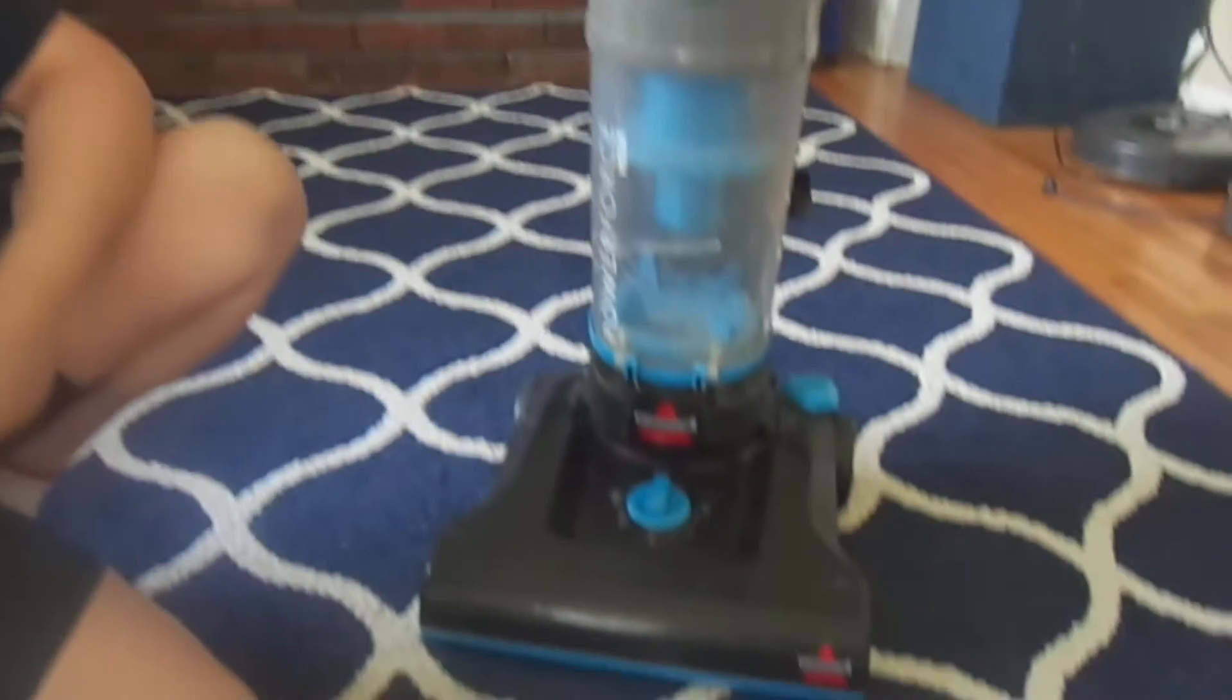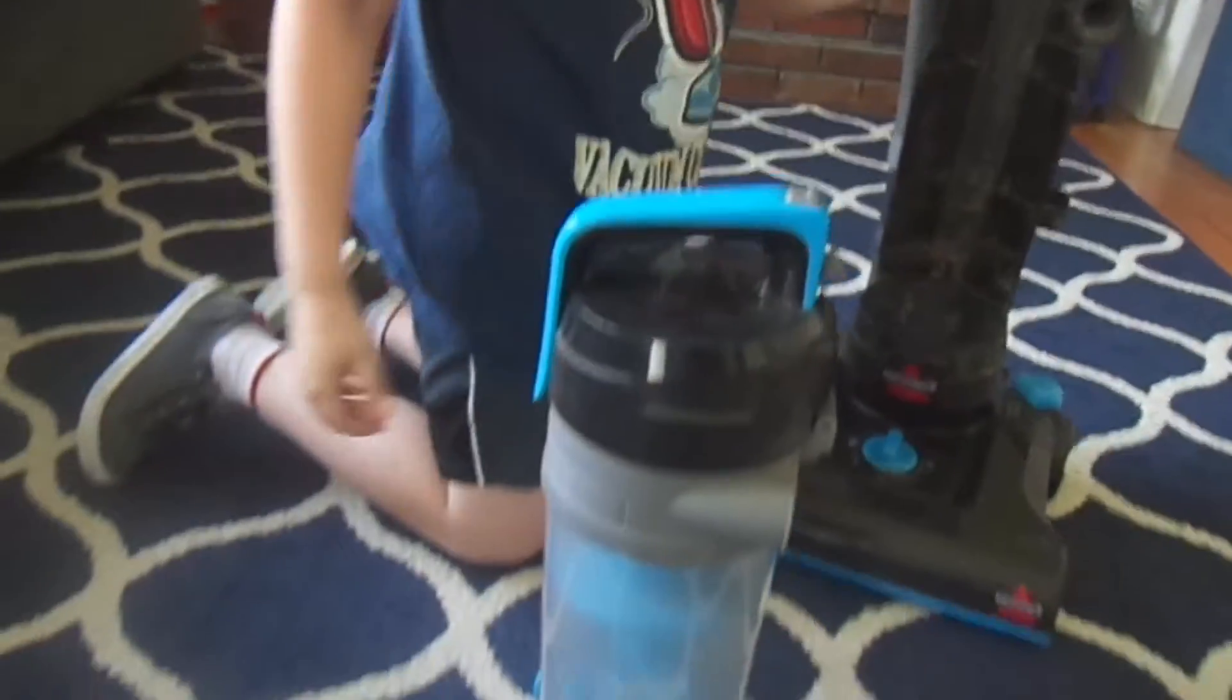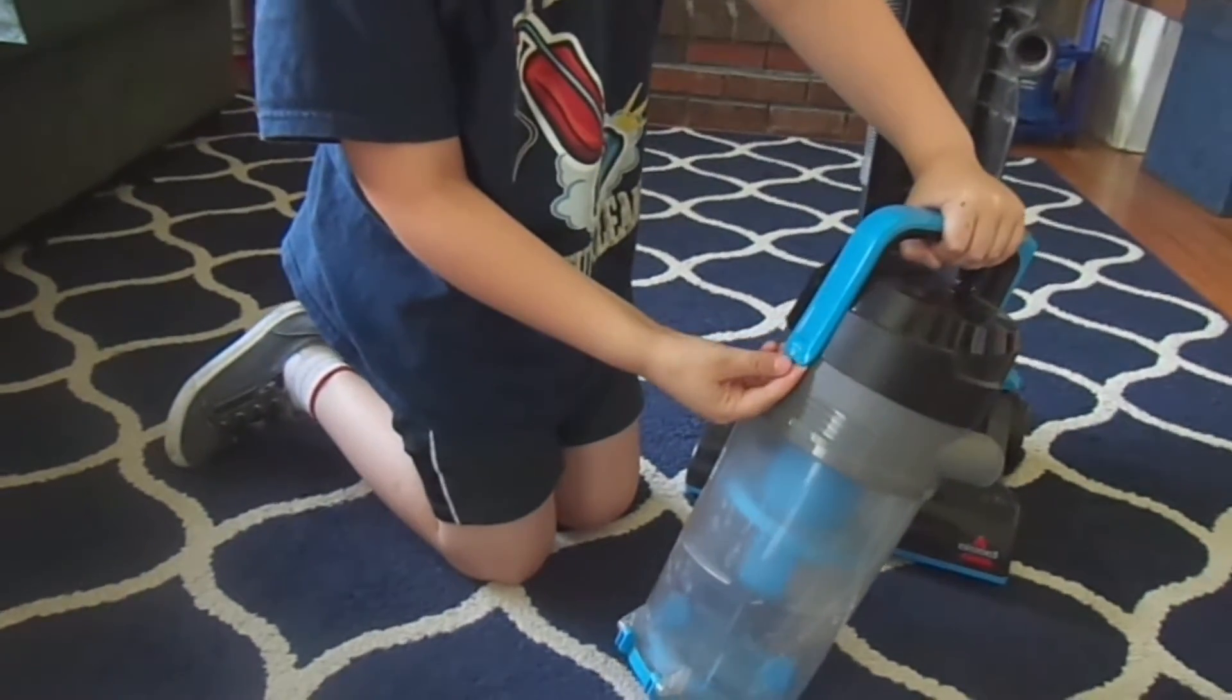So if your vacuum has a bad smell or it's not picking up anything, one of those, press the empty button and pull out your bin. And then open the latch right here that says pull for filter.